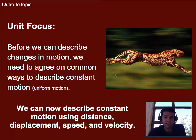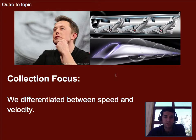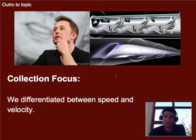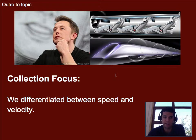We have a way to describe constant motion using distance, displacement, speed, and velocity. The collection focus was to really differentiate between speed and velocity. We started with distance and displacement — that'll be clear why we did that a little bit later in the next collection. Then we differentiated between speed and velocity, talking about how one has direction and one does not. Speed: no direction needed, just how fast are you going. Velocity: how fast are you going, and specifically what direction.